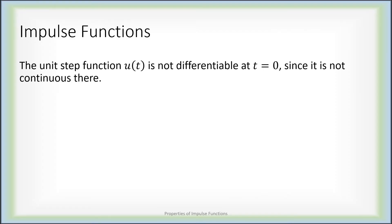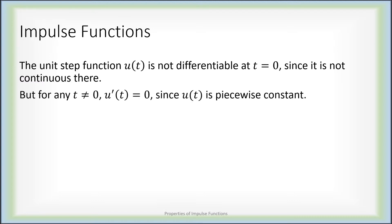What is an impulse function? Remember the unit step function, which goes from zero to one at the origin. At t equals zero, it's not continuous — it has a step, and therefore it definitely doesn't have a derivative. For any value other than zero, to the left of zero the function is constantly zero, and to the right it's constantly one. So for any value of t other than zero, the derivative of the unit step function is zero.